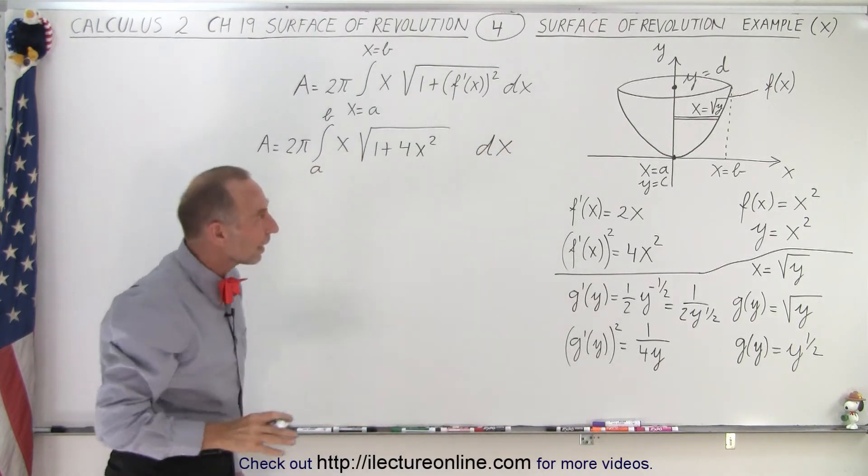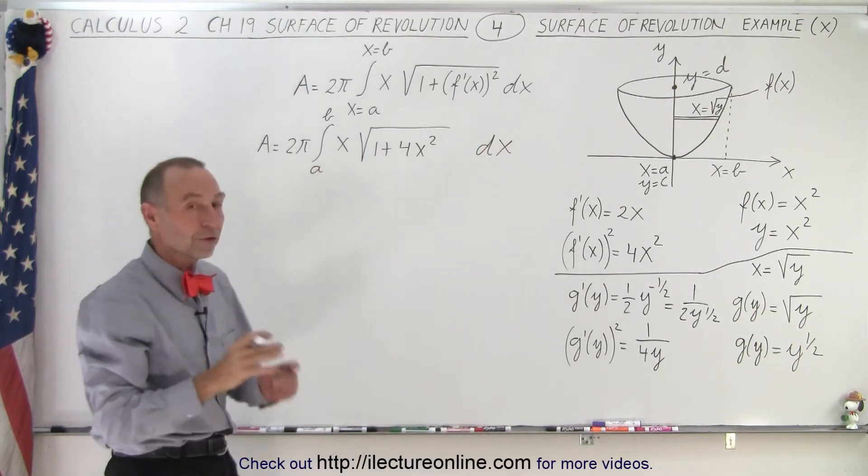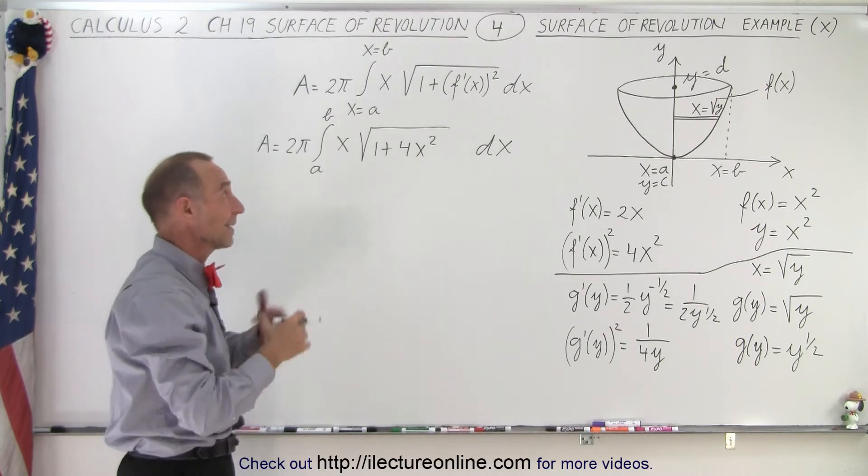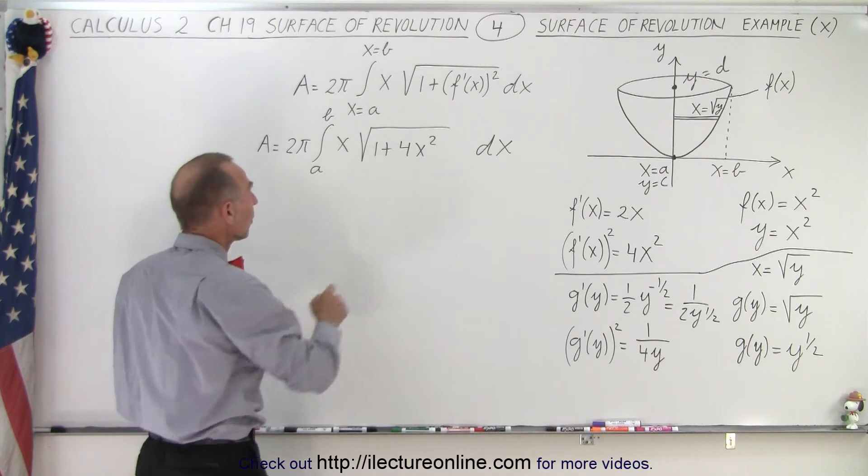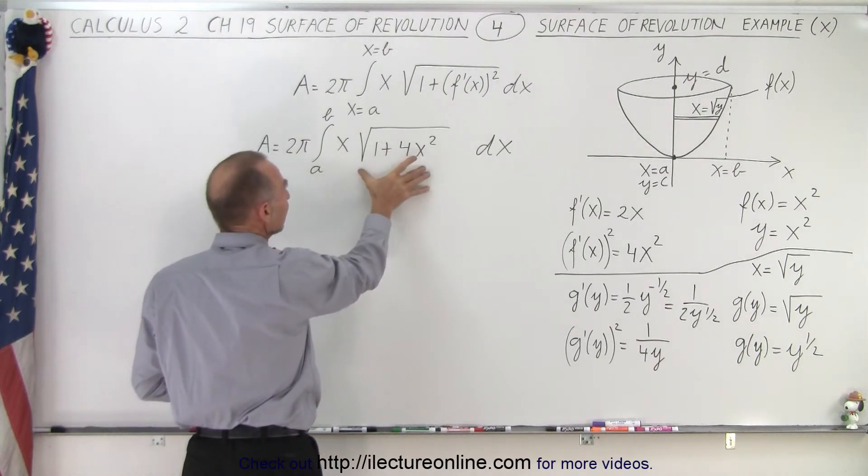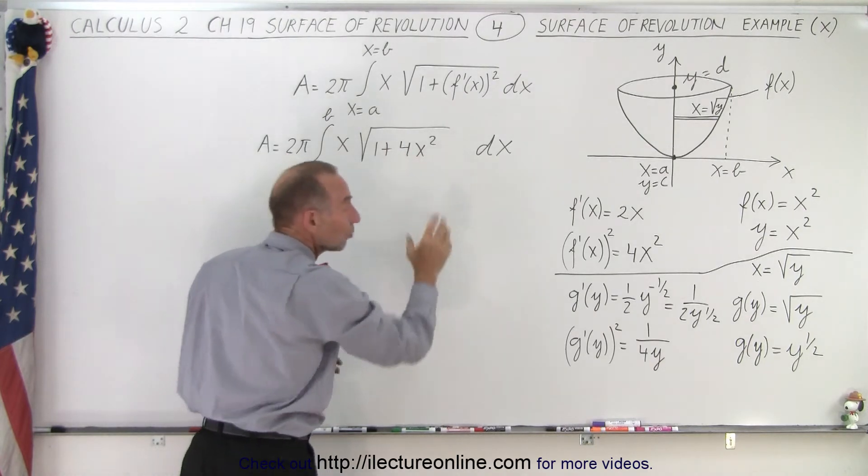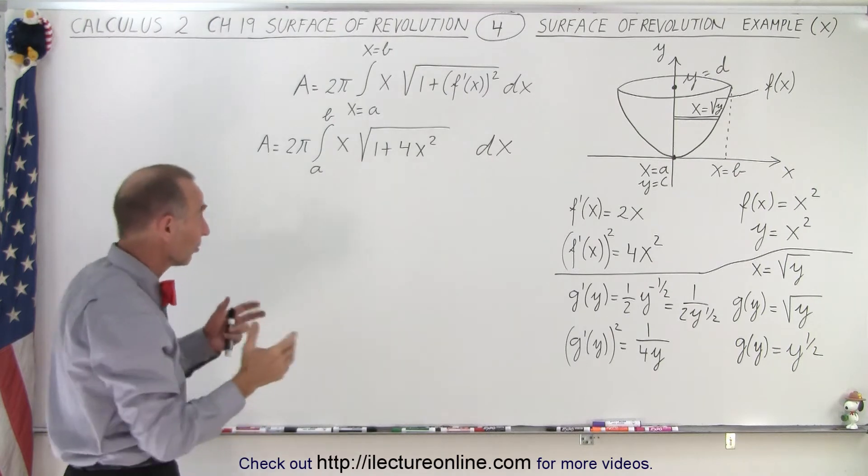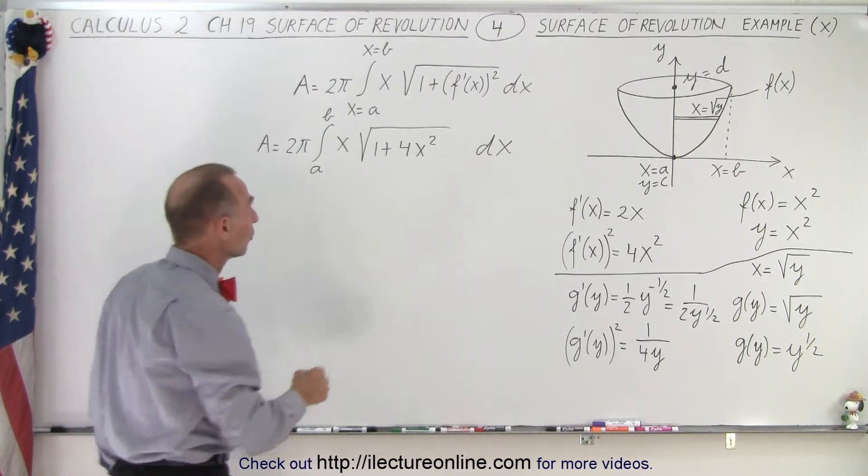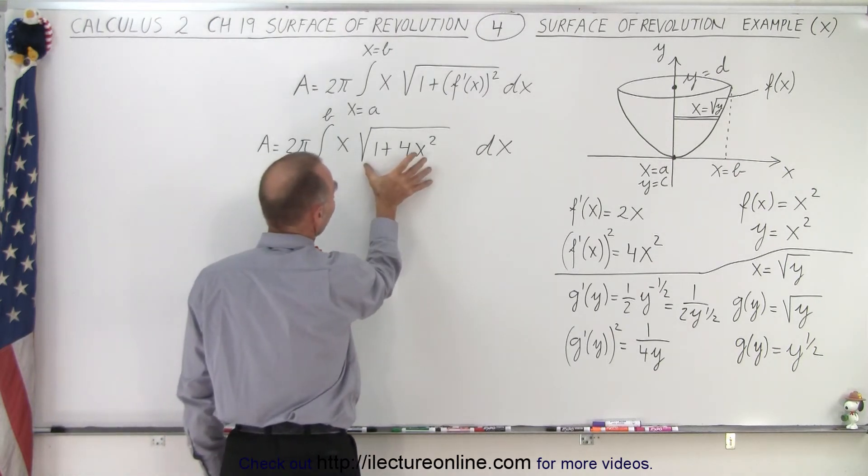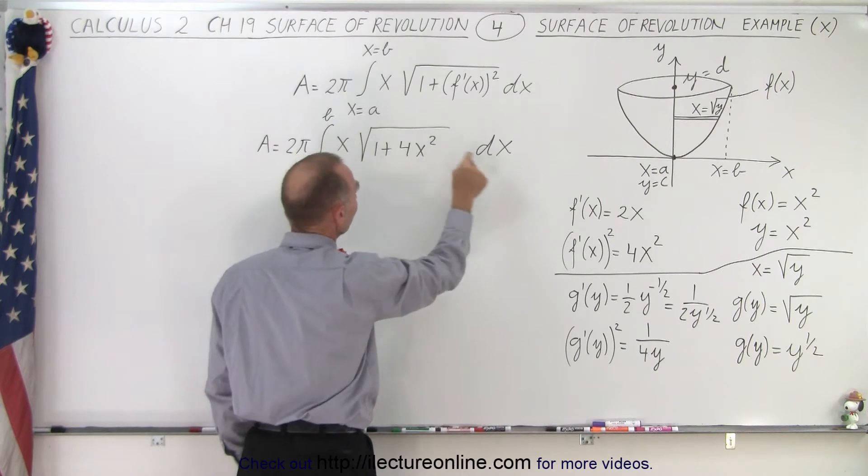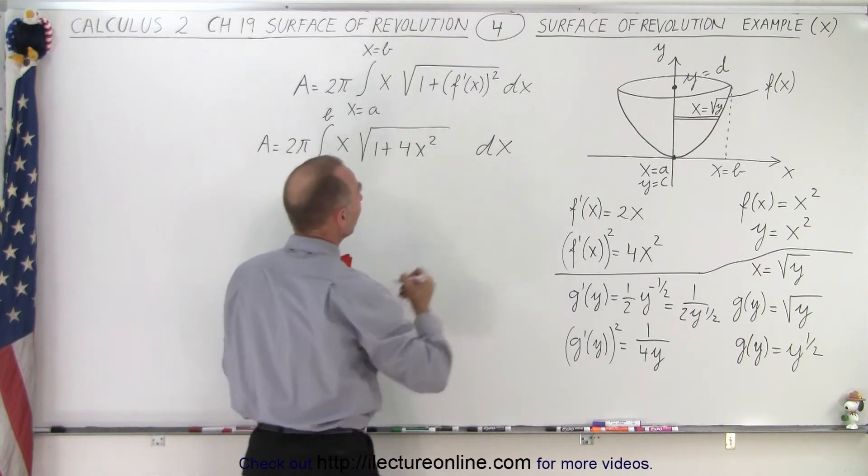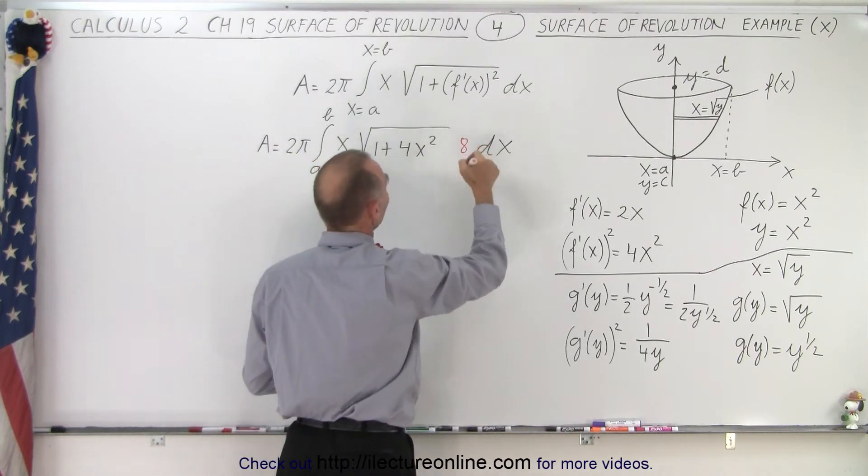Now it turns out that finding the integrals of the surface of revolution is often a lot easier than finding the integrals of the arc length, because you end up usually with something outside the square root sign that allows you to find the proper differential. In this case we're lucky. Notice that the differential of the quantity inside the radical is going to be 8x. We have 8x times dx. We have an x times dx. That means we need to multiply this by 8, and of course when we multiply by 8, we also have to divide by 8.